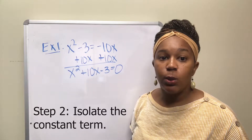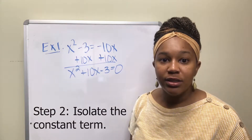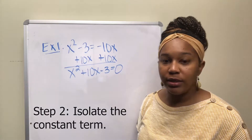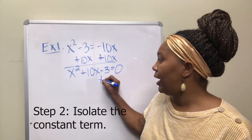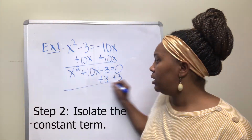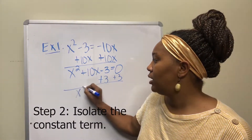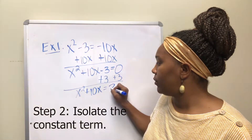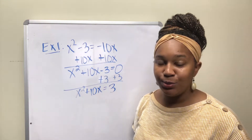Step two is to isolate the constant term — the term that has no variable connected to it. In this case that's minus three. So we isolate the constant term by adding three to both sides. When we add three to both sides, we get x squared plus 10x equal to three.